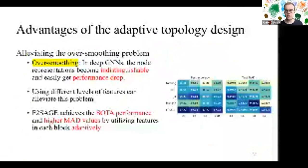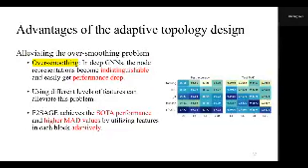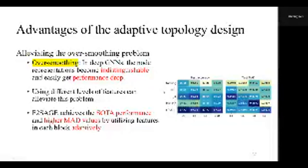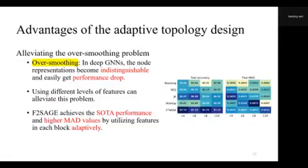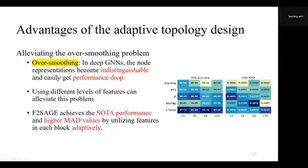As mentioned before, the stacking manner can extract higher-level features but suffers performance drops in deep GNNs. The node features become indistinguishable and easily lead to performance drops. In this paper, we use MAD to evaluate the over-smoothing problem. Higher scores indicate more distinguishable features. From the table, we can observe that baselines utilizing different levels of features can alleviate over-smoothing, as they achieve higher performance and higher MAD values. Compared with these three baselines, our method F2Sage achieves the top performance and higher MAD values by utilizing the features in each block adaptively.